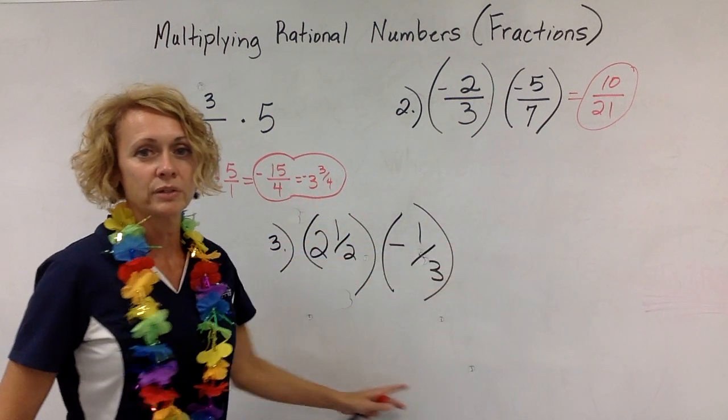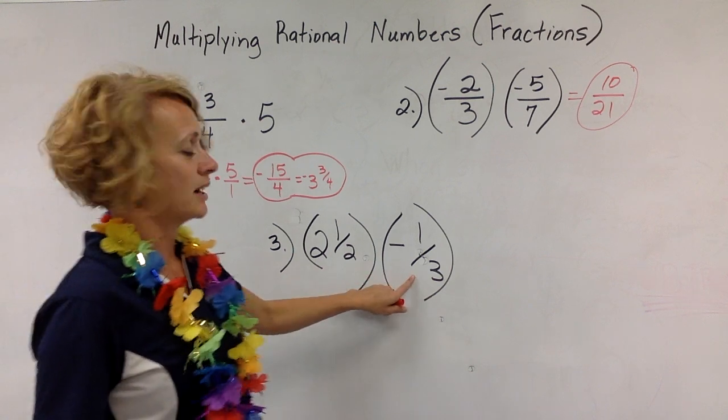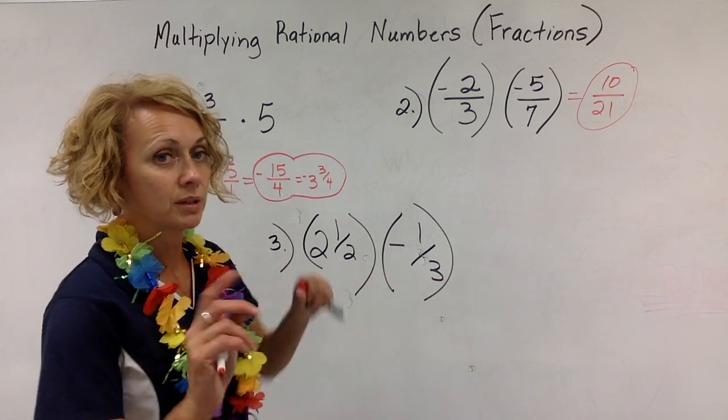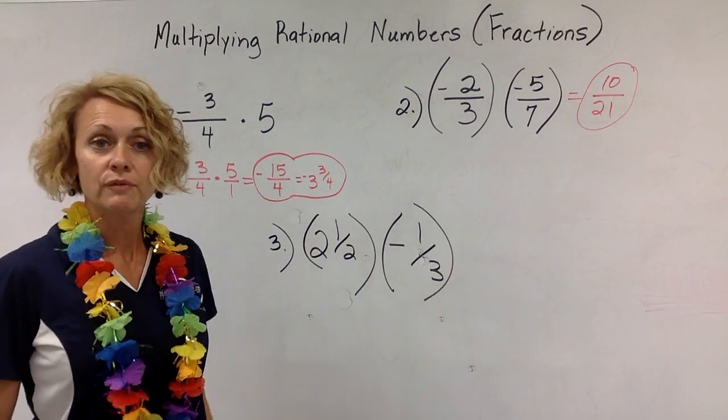Look at our last problem right here. We've got a mixed number that's positive multiplied by a fraction that is negative. So we're going to remember the rules for multiplying fractions and we're also going to remember our rules for signs.